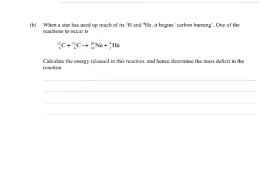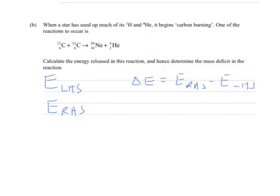When a star has used that much of its hydrogen and helium, it begins burning carbon. One of the reactions together is this. Calculate the energy released in this reaction and hence determine the mass deficit in the reaction. So the energy released in the reaction will be the difference from the left hand side. And then we would use, because we're trying to find the mass deficit from E equals MC squared, we rearrange for the mass deficit being E over C squared. C squared being the speed of light.